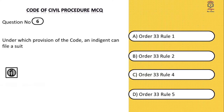Question number six: under which provision of the Code can an indigent person file a suit? The options given are Order 33 Rule 1, Rule 2, Rule 4, and Rule 5 — so all options are for Order 33, only the rules change. It is very necessary that you know the entire provision, not just the order. Let's see which provision applies.